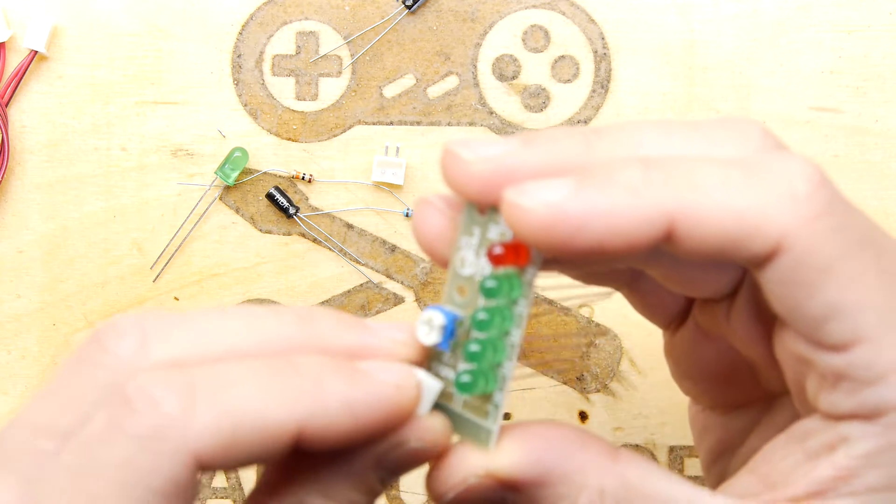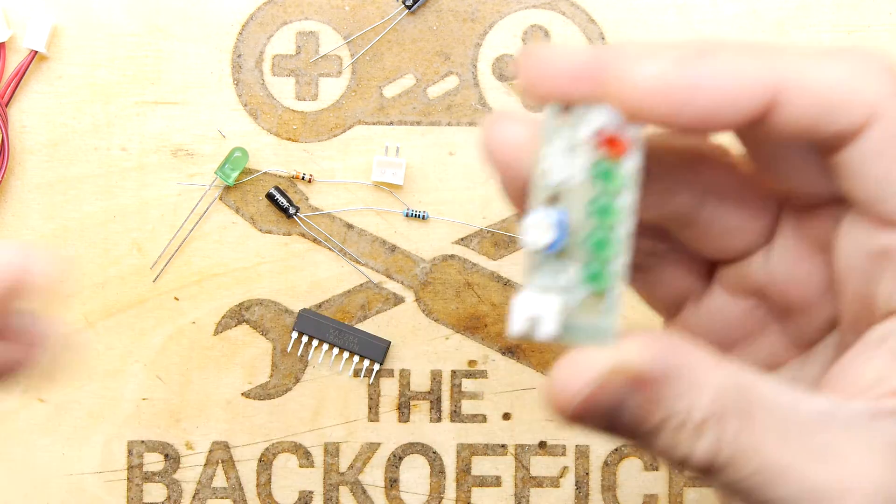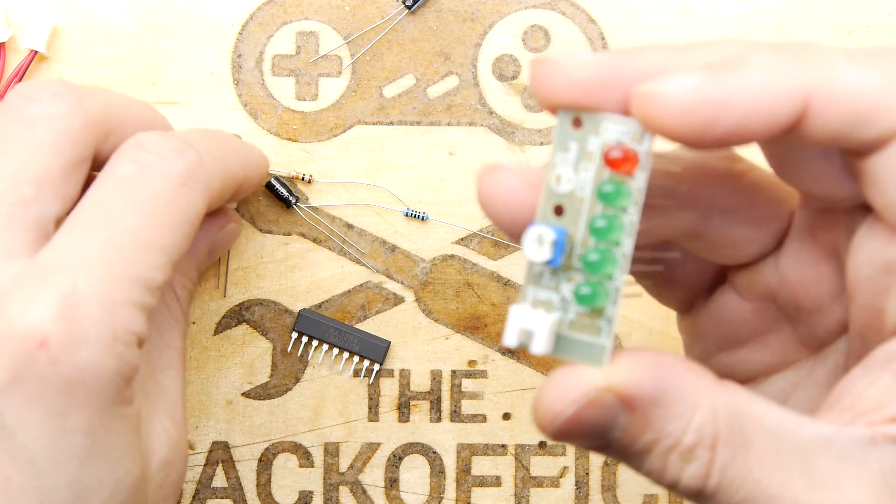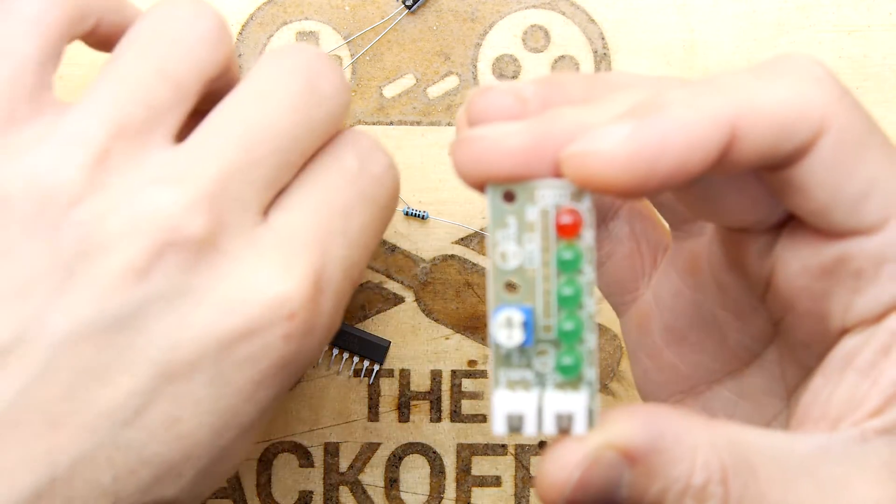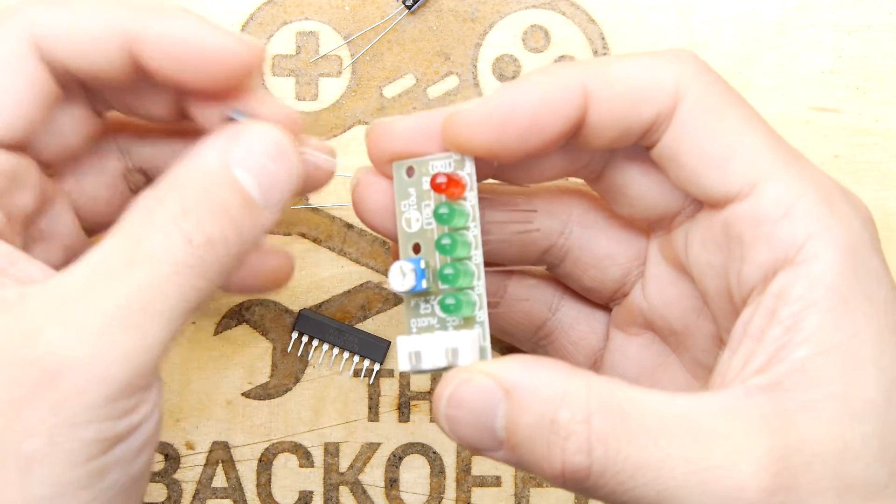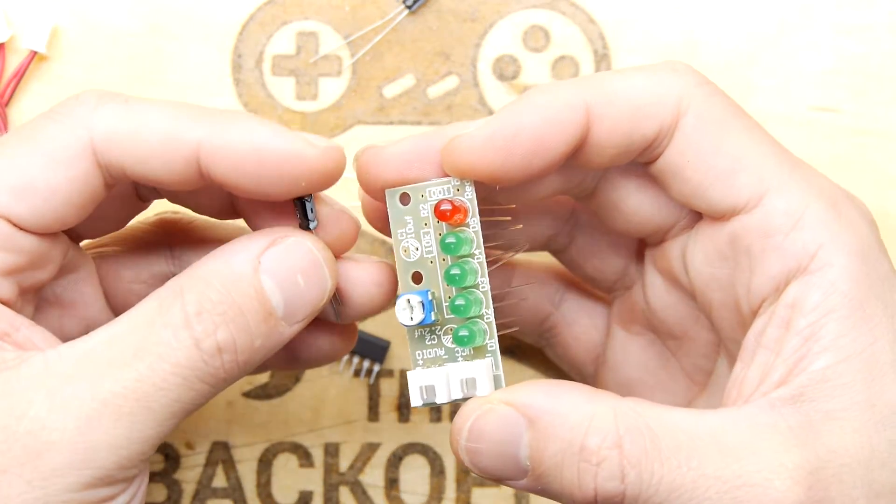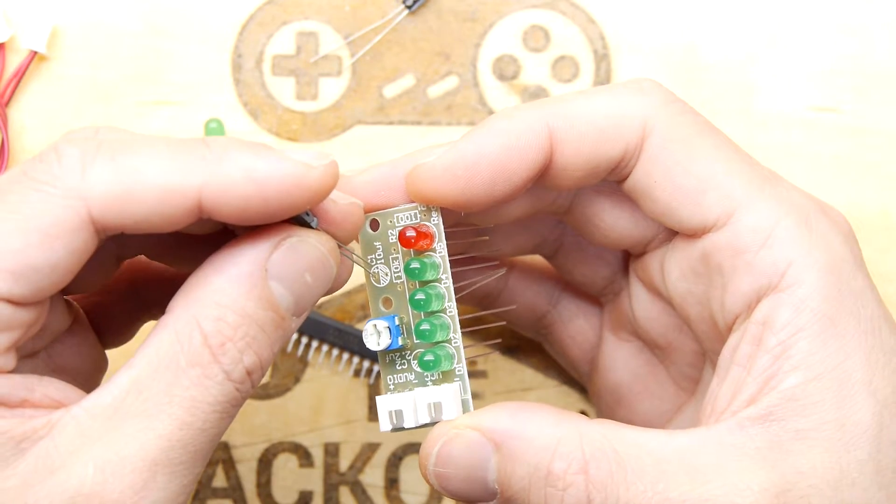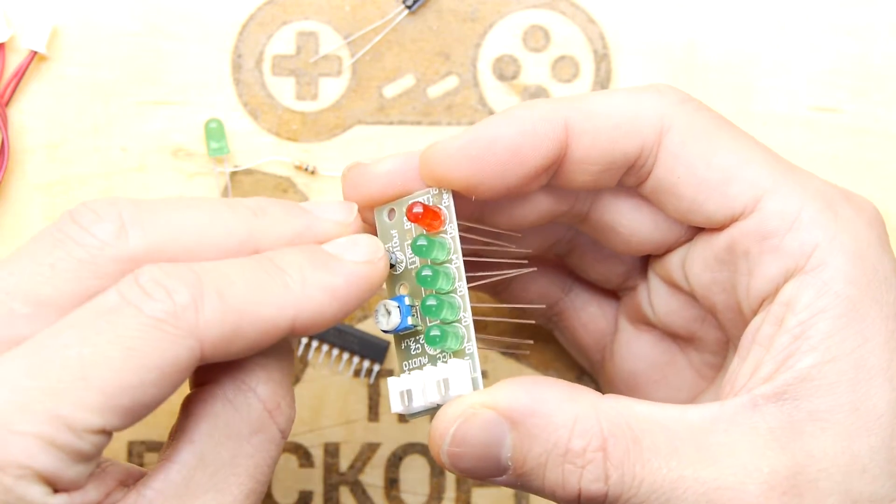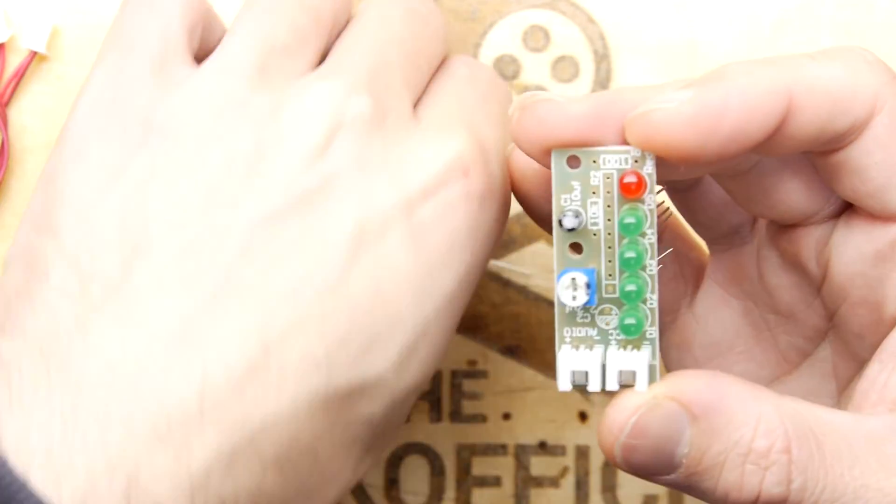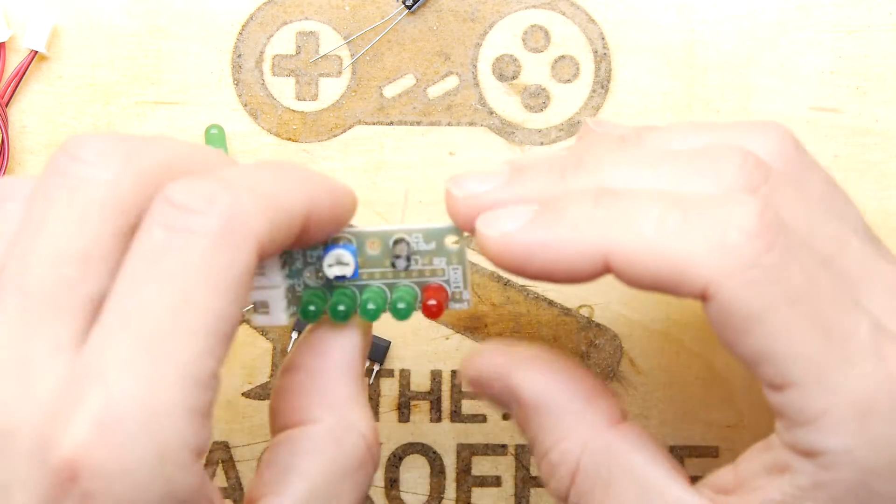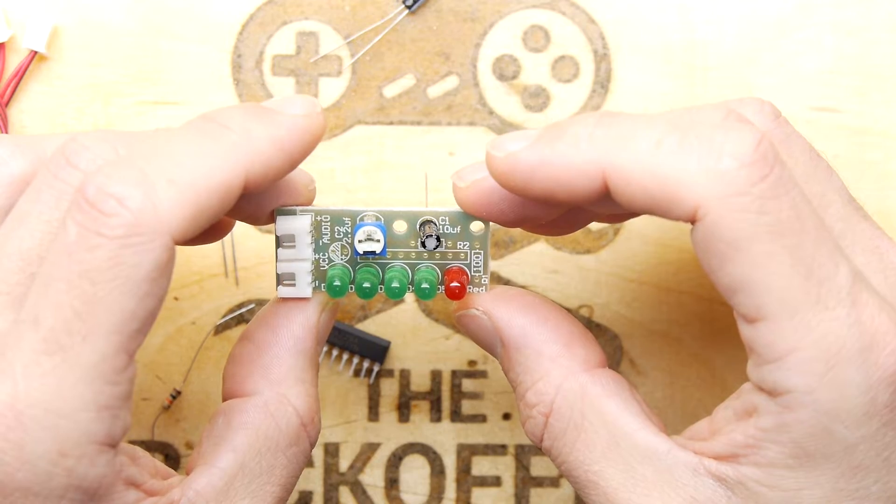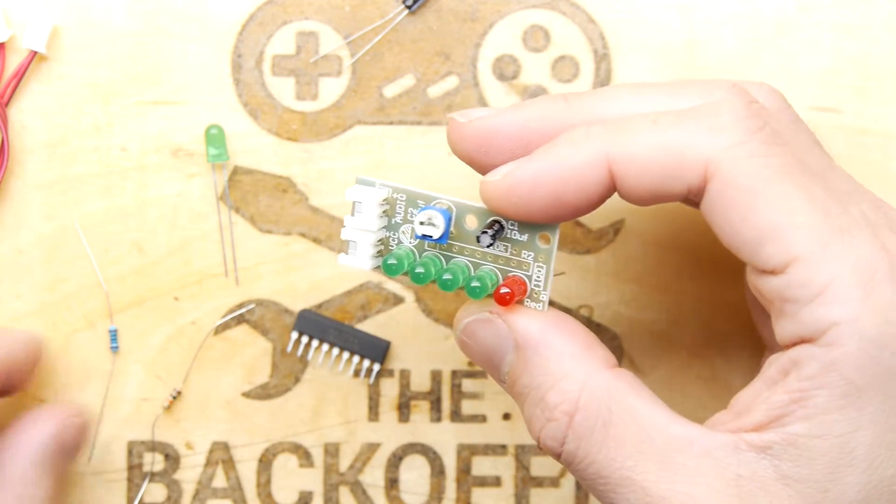And we've got our socket for audio. And we've got our socket for power. Electrolytic capacitor right there. So we're going to put that in again. Remember long leg positive. Electrolytic capacitor. And then the 10k resistor. And 100 ohm.